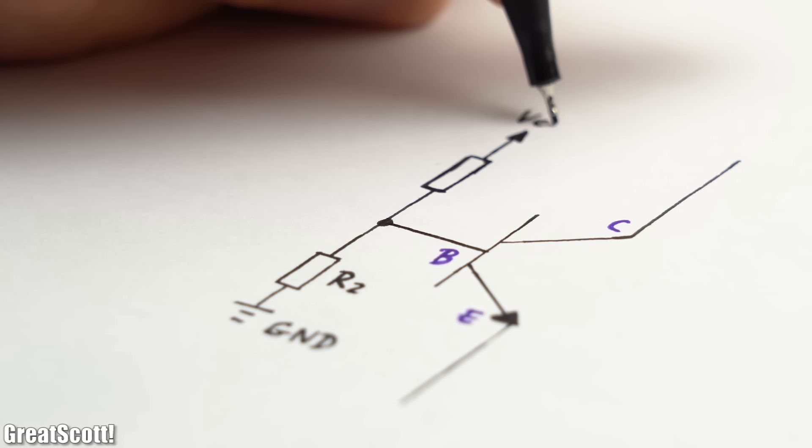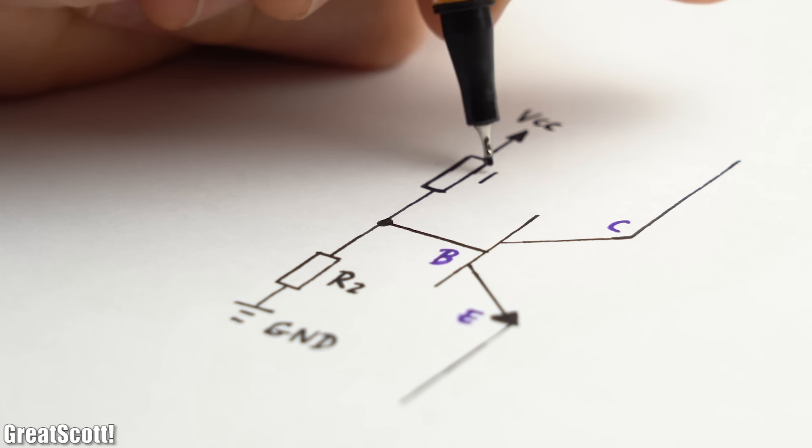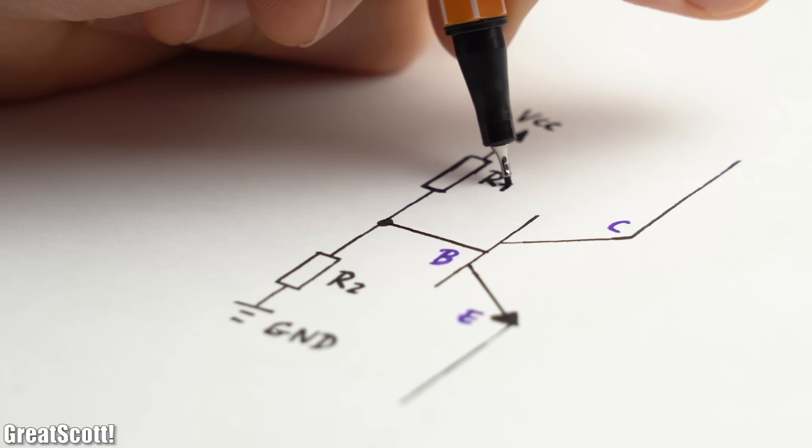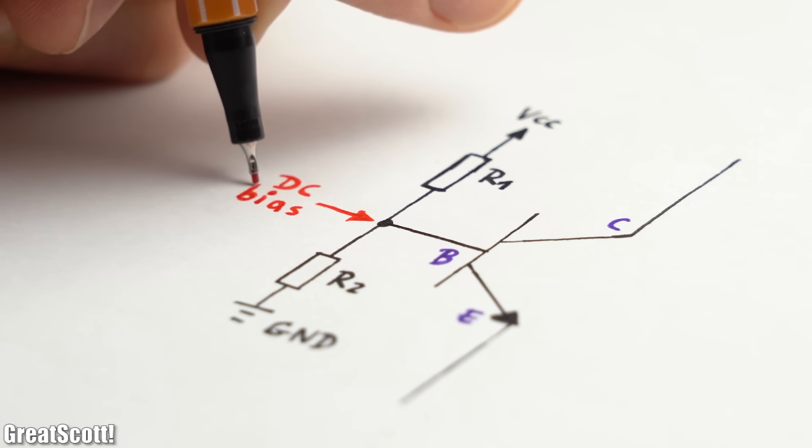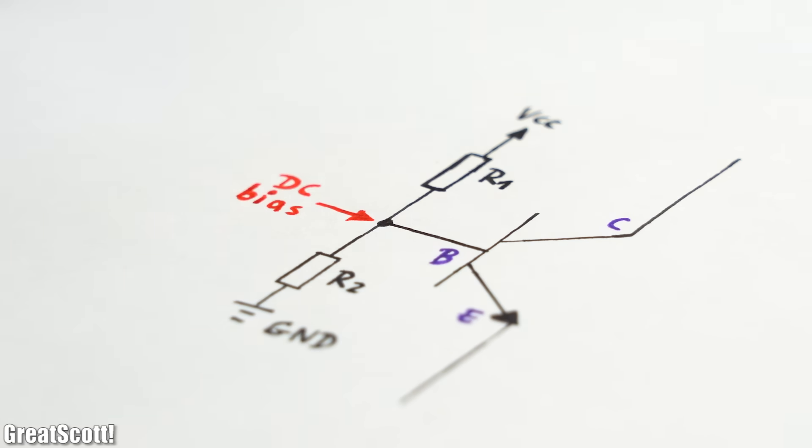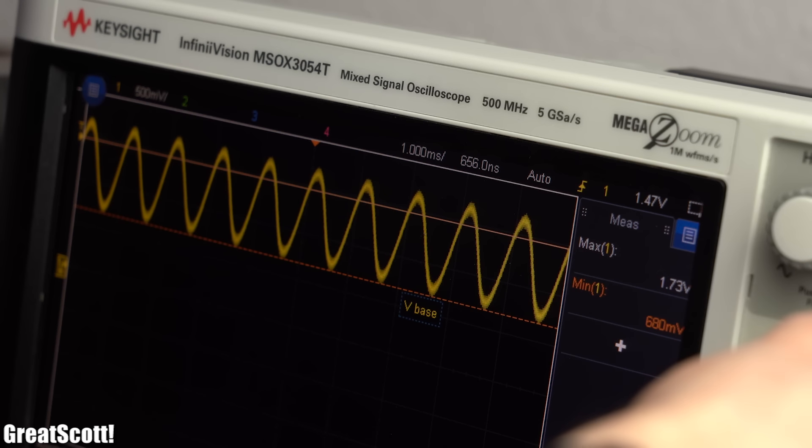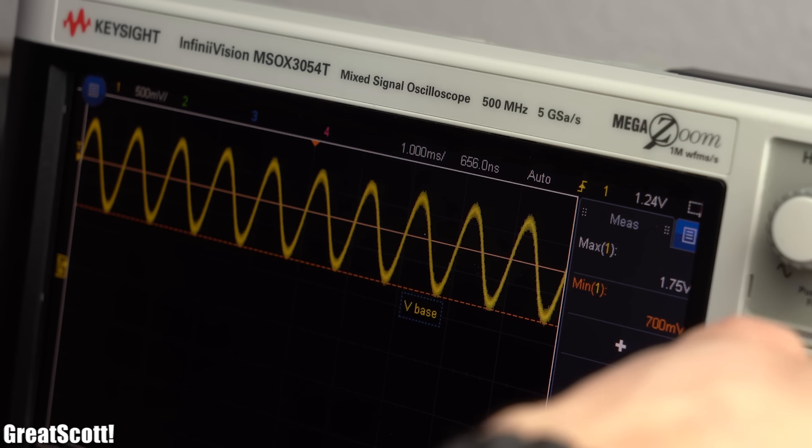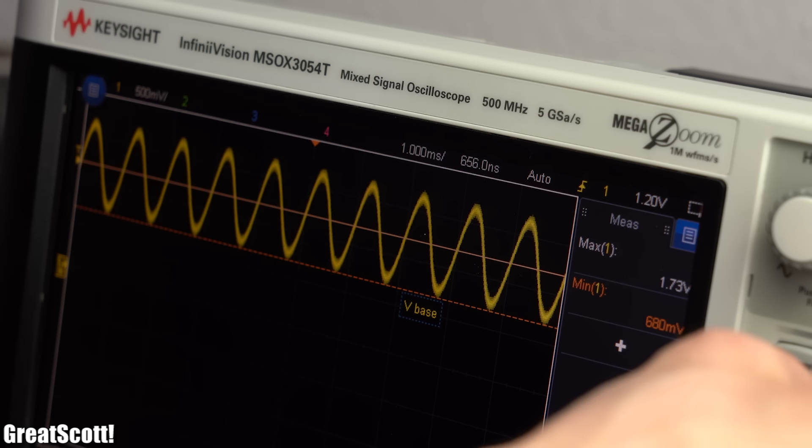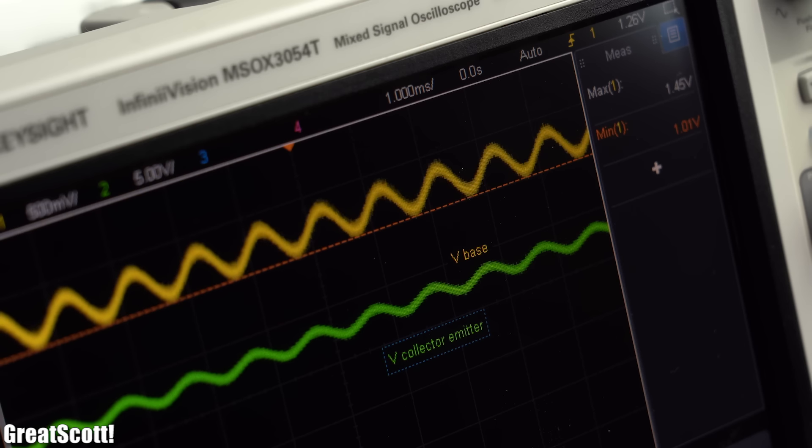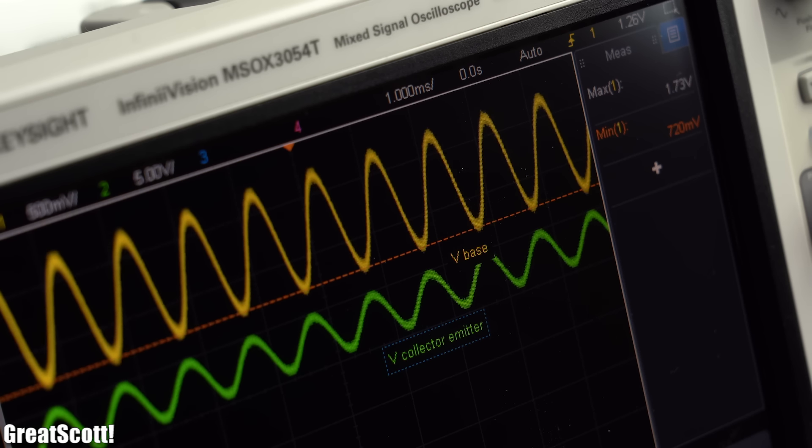Instead, we have to add such a resistor network to the base of the transistor in order to bias the base with a DC voltage and current. This way we can let the input voltage/current oscillate around a DC offset value, and thus all of the input signal gets used for the amplification.